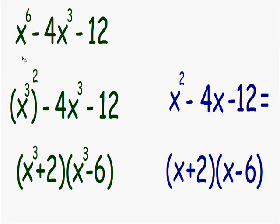So the green trinomial x to the sixth minus 4x cubed minus 12 can be rewritten as x cubed plus 2, all multiplied by x cubed minus 6.